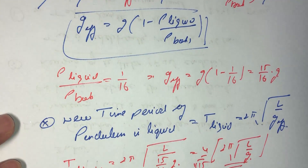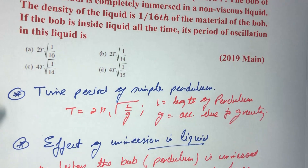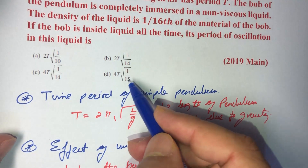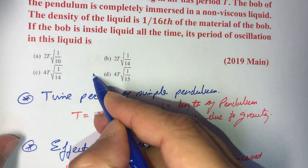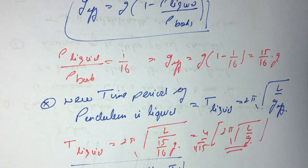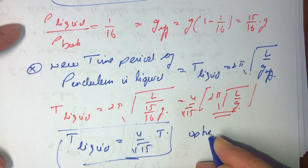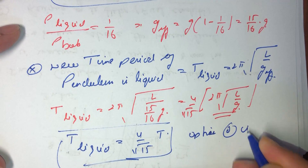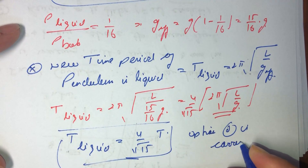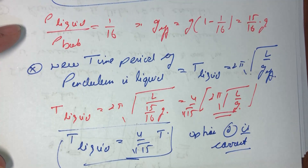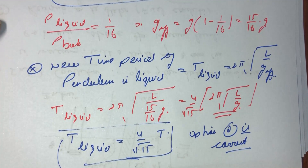So the options that are available to us — option number D is the correct option. Option D is correct. So this completes the question. Thank you.